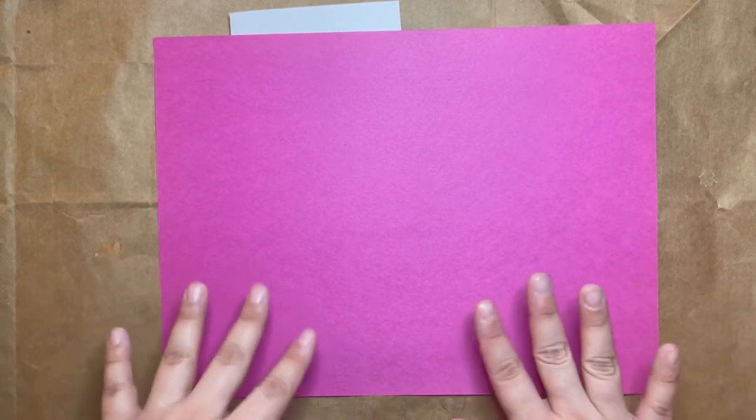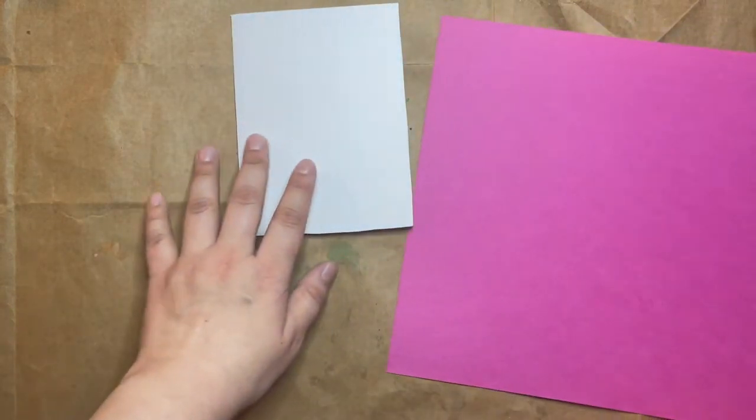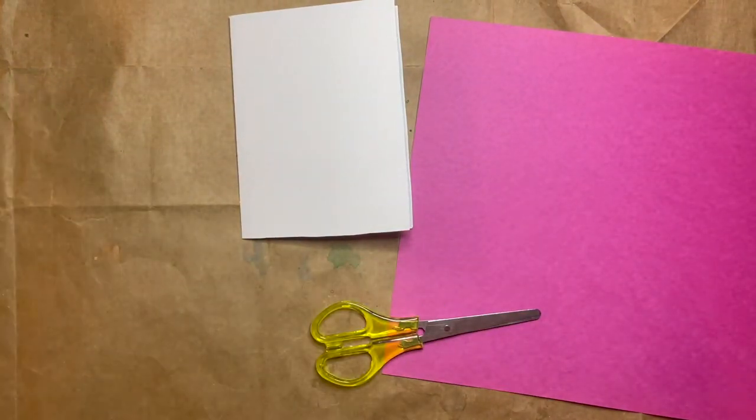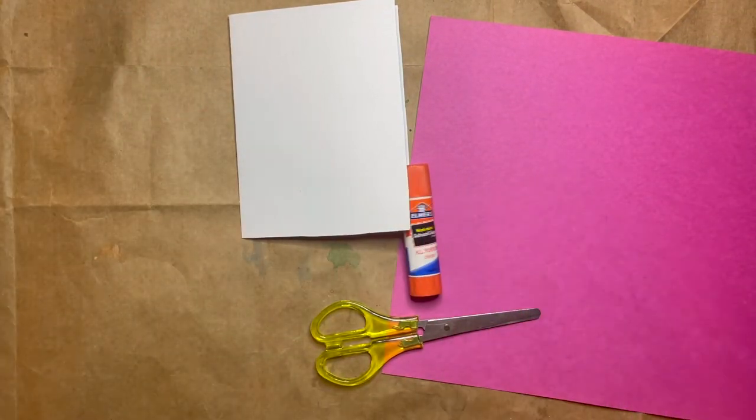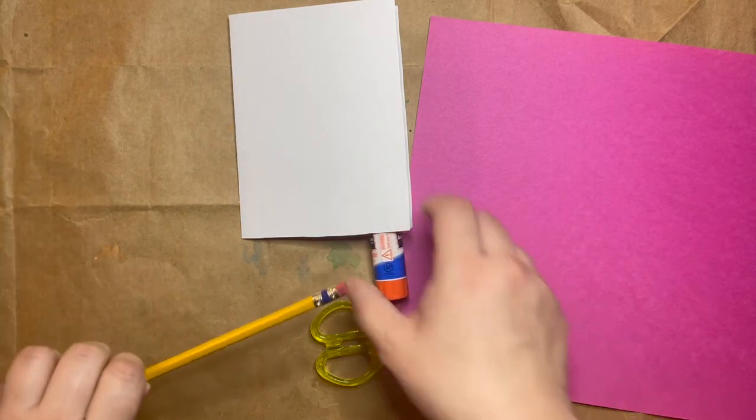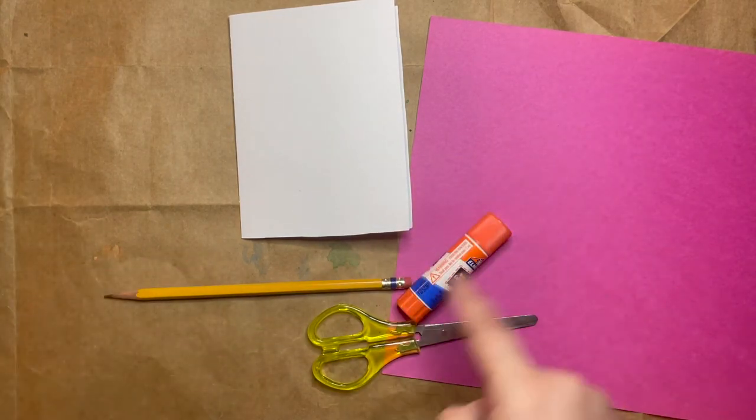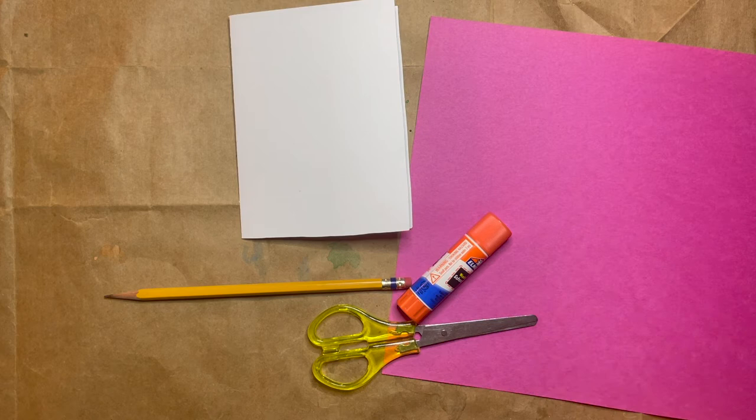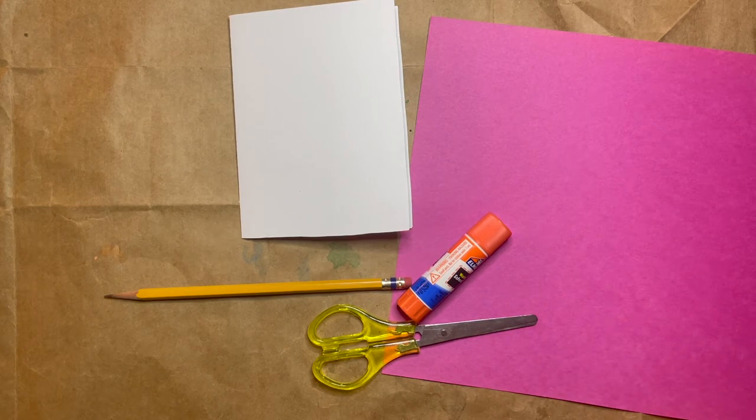You could also use multiple colors. If you wanted to make yours look like a hot air balloon you could use multiple different colors, but I'm just going to use pink for mine. You'll want your scissors, your glue stick, and your pencil if you would like to trace out your design before cutting. You can pause the video here and go gather your supplies.